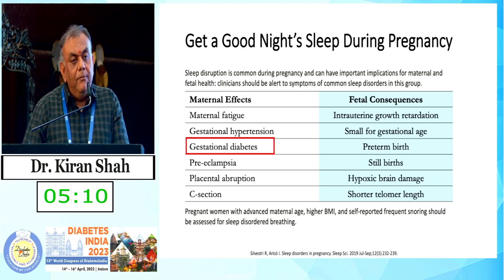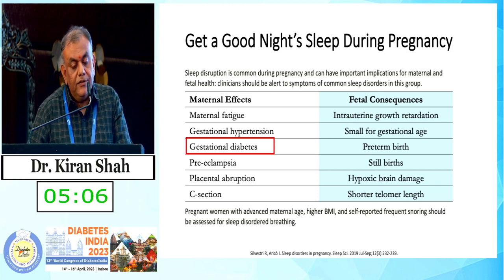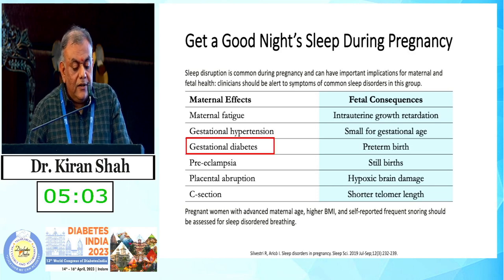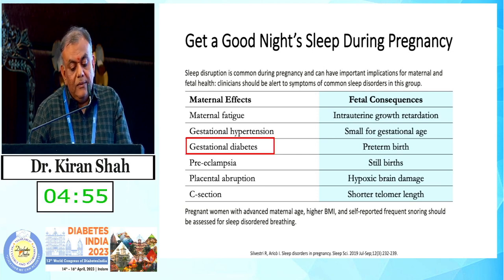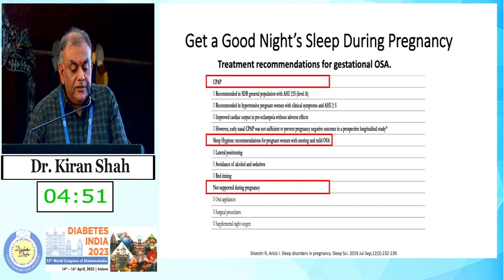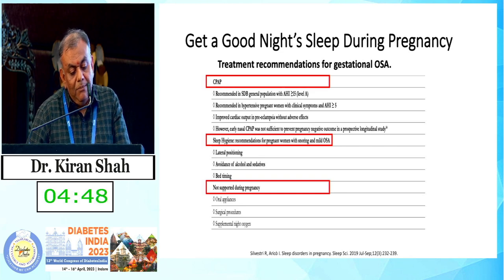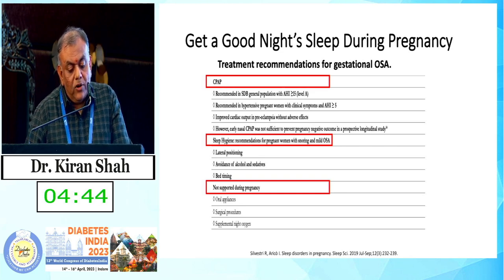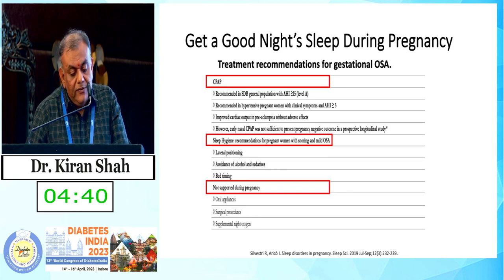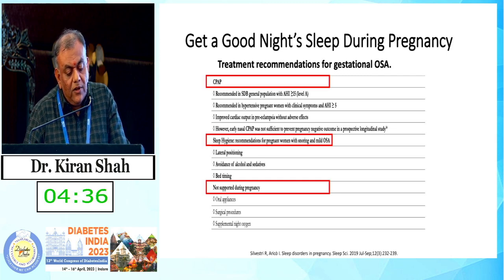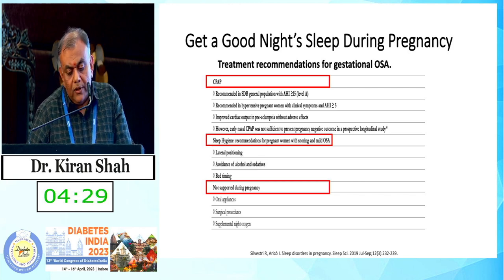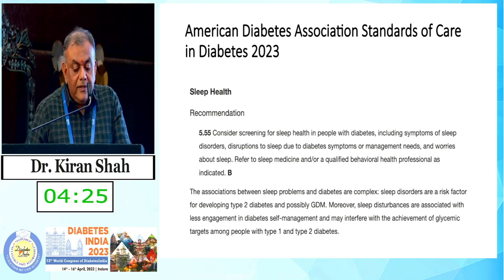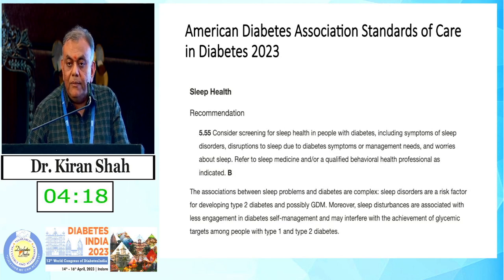Sleep disruption is very common during pregnancy due to physical and hormonal changes and can have important implications for maternal and fetal health. With respect to gestational diabetes mellitus, pregnant women with advanced maternal age, higher BMI, and self-reported frequent snoring should be assessed for sleep-disordered breathing. Treatment recommendations for gestational OSA include CPAP if the apnea-hypopnea index is more than 15, and sleep hygiene recommendations for mild OSA. Oral appliances, surgical procedures, and supplemental oxygen have not been approved for use during pregnancy. The ADA states that sleep disorders are a risk factor for developing type 2 diabetes and possibly GDM.